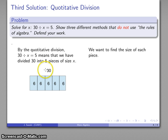By the quotative interpretation of division, I've taken 30, divided it into pieces of size 6, and there's five of them. That gives me my quotient there, and that tells me my solution is x equals 6.